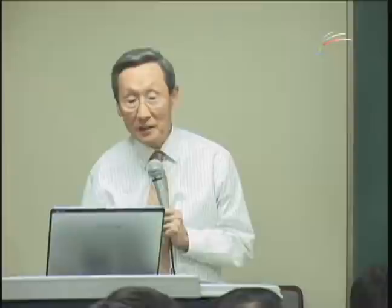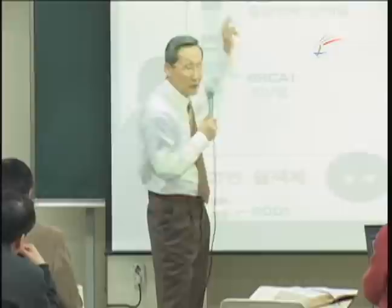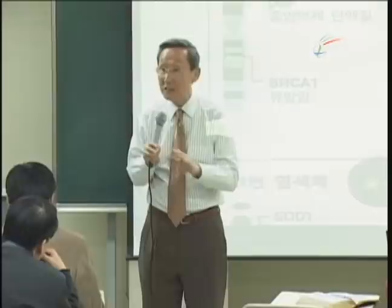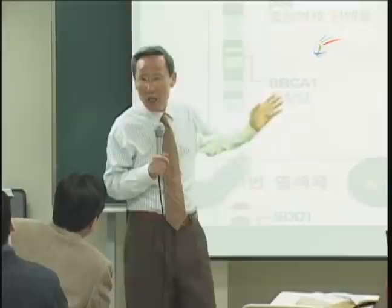Let's look at chromosome number 17 — there is P53. That's the tumor suppressor protein. When the P53 gene is turned on, then those bad cells don't get into cancer cells easily. God doesn't want us to get into cancer cells. That's His will.